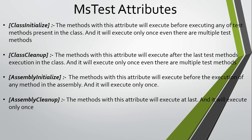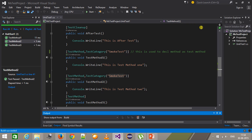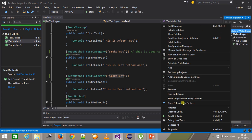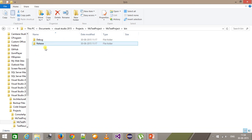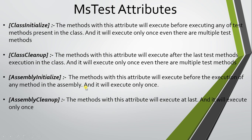Hello everyone, welcome again. In our previous video we discussed MS Test attributes. In this video we are going to discuss some more attributes of MS Test: AssemblyInitialize and AssemblyCleanup. Before going into the detail of these attributes, let me tell you what an assembly is. Inside Visual Studio, whenever I build my project it generates a DLL file. Inside bin/debug we have a DLL file for our project. This DLL file represents a dynamic link library, which is also called an assembly.